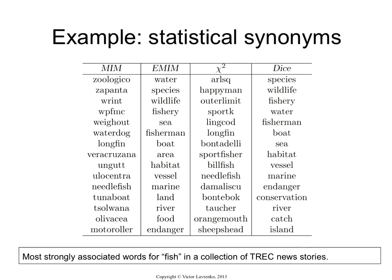These are quite different from the other way. Fishery, sea, boat, vessel, marine, river, food — that's all very much related to fish. The same thing happens for the Dice coefficient. Now, mutual information and EMIM are very similar — one of them just involves taking the log of another and multiplying by a term. At the basis, they're very, very similar to each other. So why is one producing reasonable terms and the other producing these strange words?